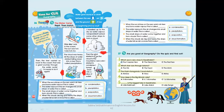Then the wind started to blow the cloud to the mountains. It was cold, and I started to condense — I turned back into a drop of water. The cloud was heavy, and all the drops of water started falling down into a river. This is called precipitation. Then the river carried us back to the ocean. That was a great journey through the water cycle — I am ready to do it again!